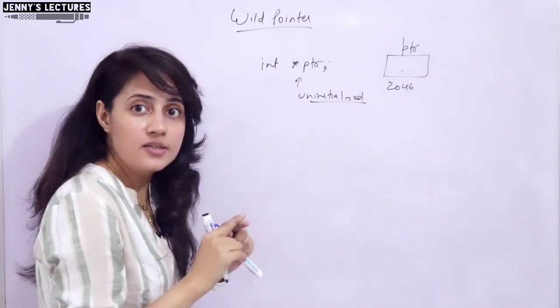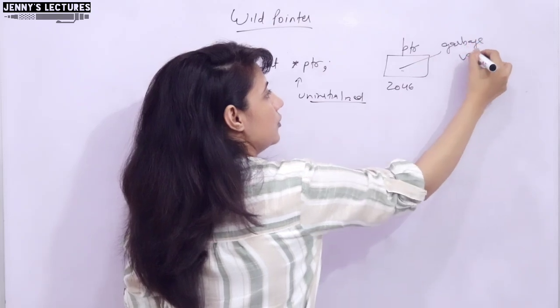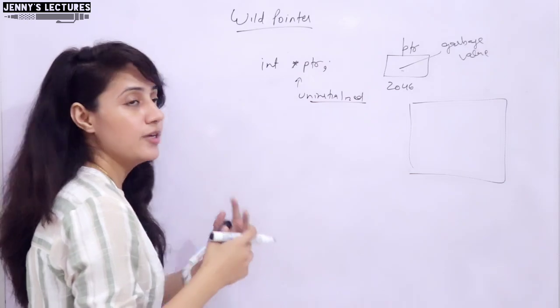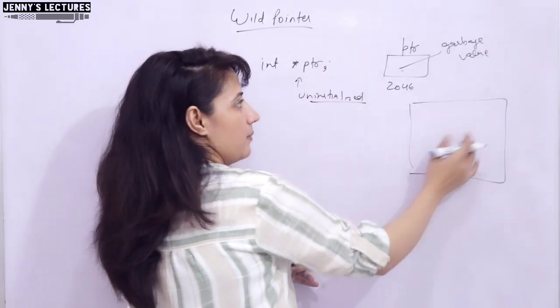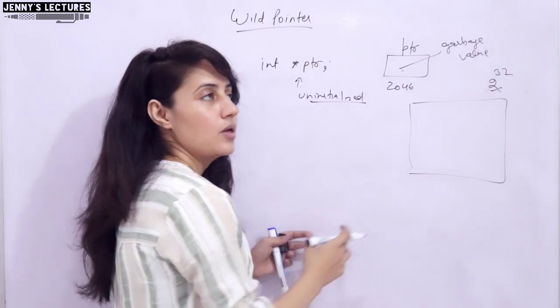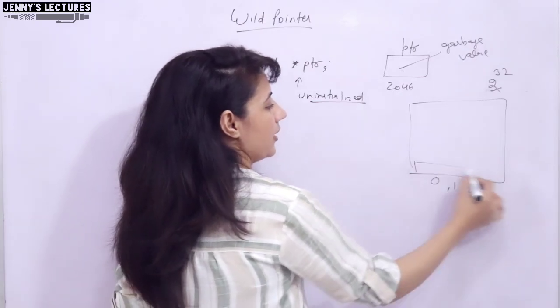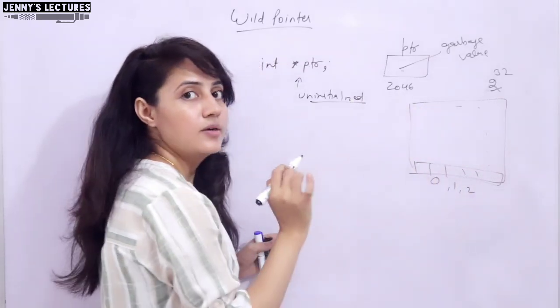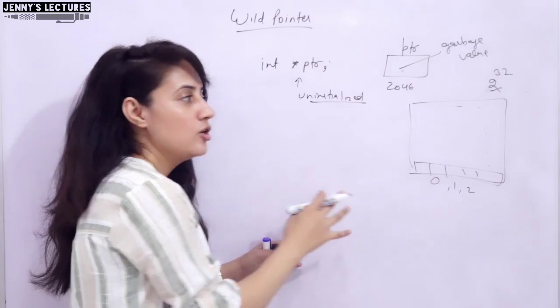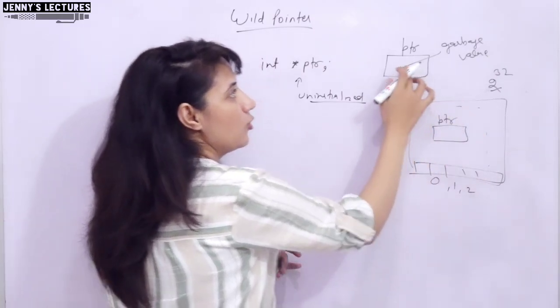And if it is uninitialized, then there would be some garbage value. We don't know. It will contain some address. If your machine is of 32 bits, then the memory would be 2 raised to power 32 bytes. Numbering would be from 0, 1, 2, each byte, like this, till 2 raised to power 32. These many bytes you would have. So somewhere in this memory, suppose somewhere in this memory, 4 bytes has been allocated to this pointer.